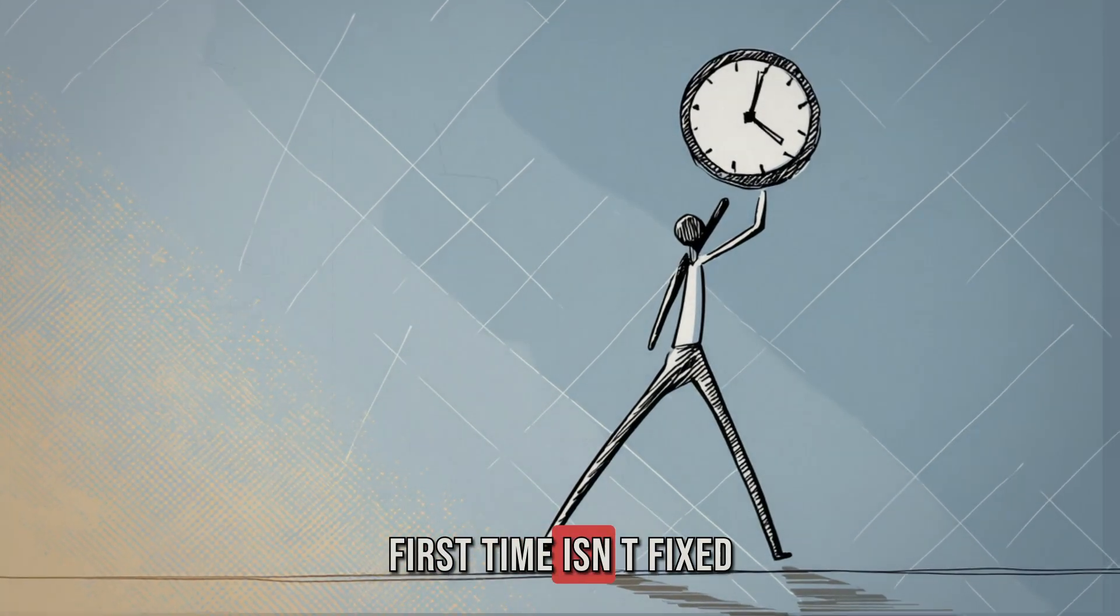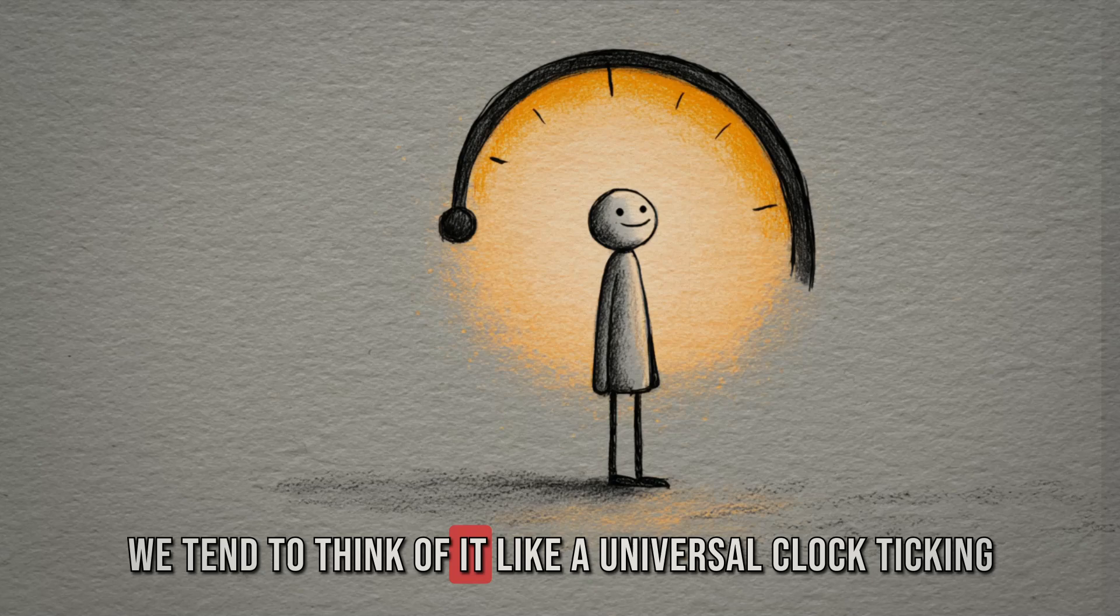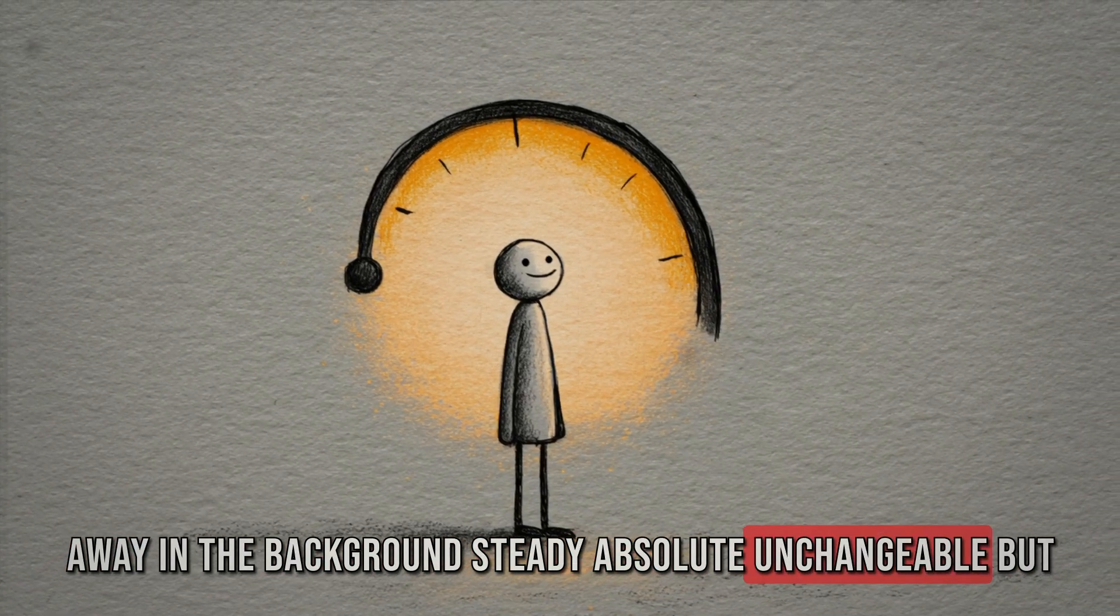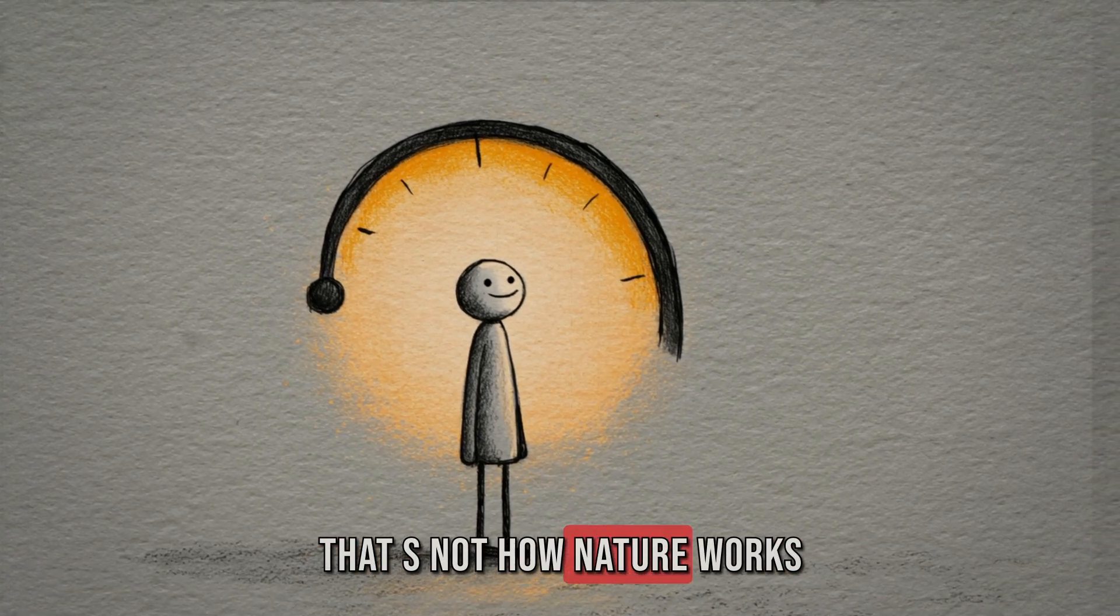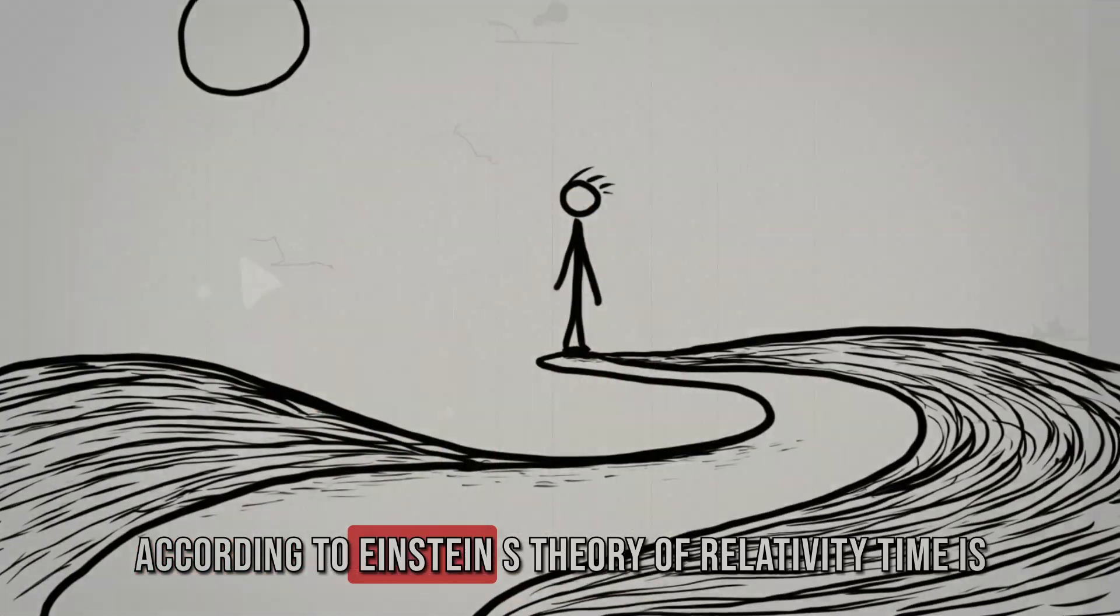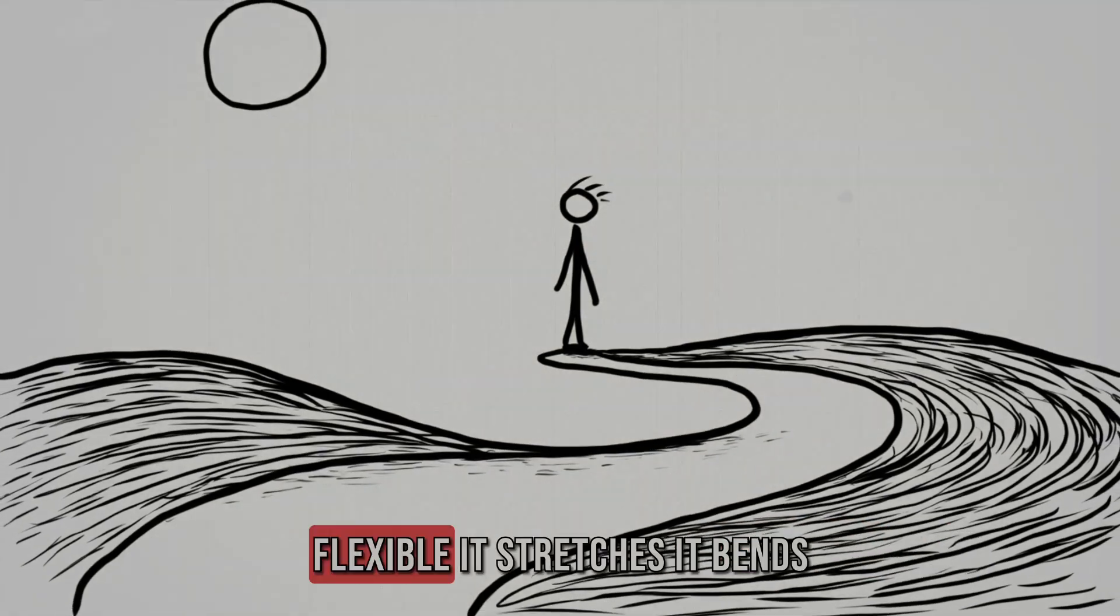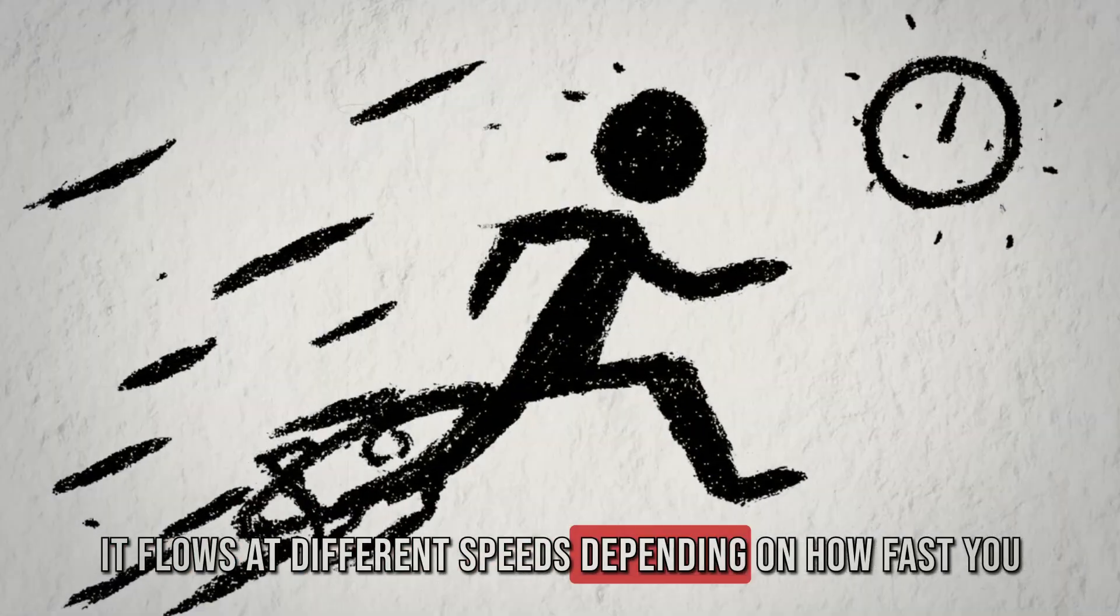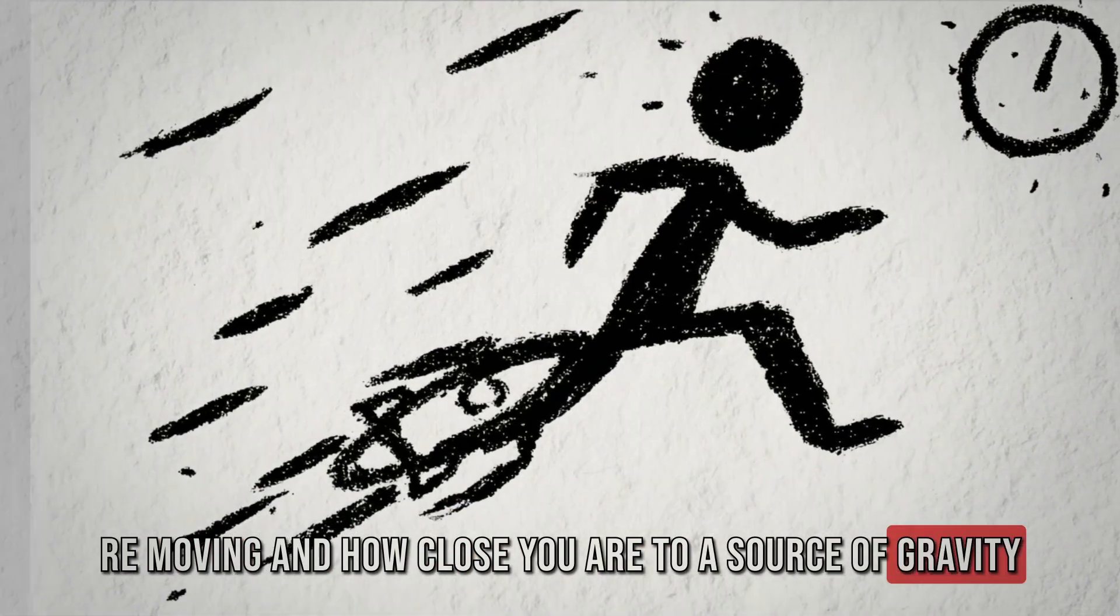First, time isn't fixed. We tend to think of it like a universal clock ticking away in the background. Steady, absolute, unchangeable. But that's not how nature works. According to Einstein's theory of relativity, time is flexible, it stretches. It bends. It flows at different speeds depending on how fast you're moving and how close you are to a source of gravity.